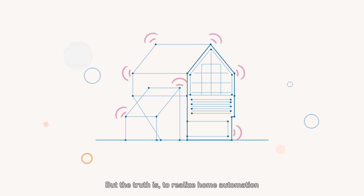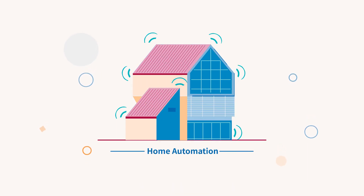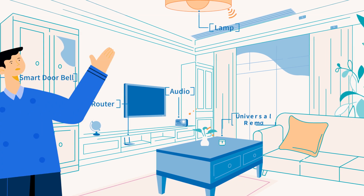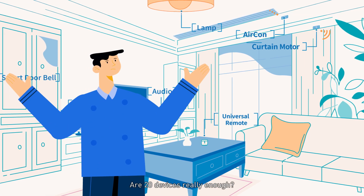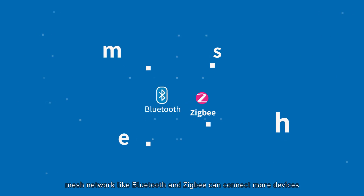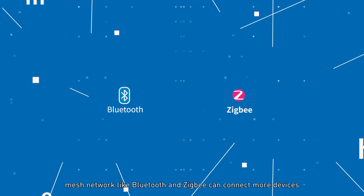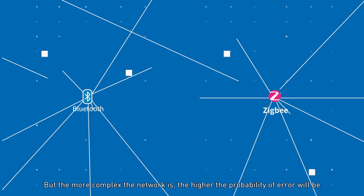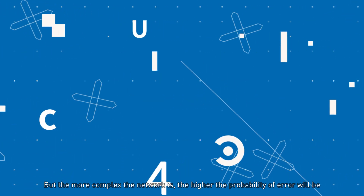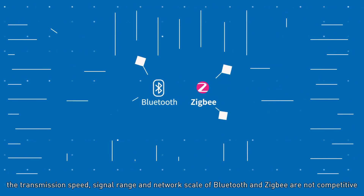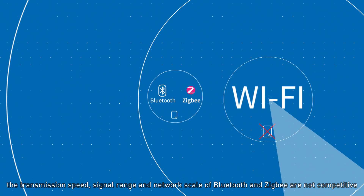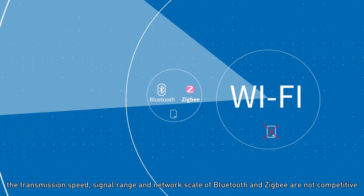But the truth is, to realize home automation, only one living room will have 5 to 6 devices. Are 20 devices really enough? Of course, mesh networks like Bluetooth and Zigbee can connect more devices, but the more complex the network is, the higher the probability of error will be. Moreover, the transmission speed, signal range, and network scale of Bluetooth and Zigbee are not competitive.